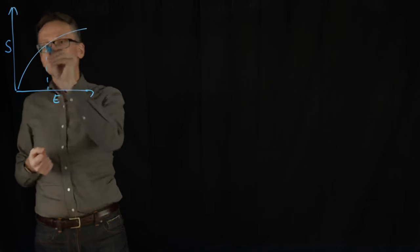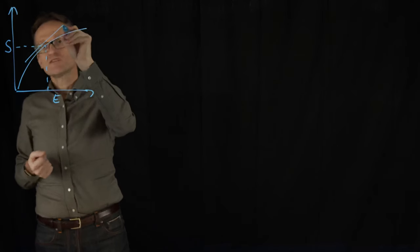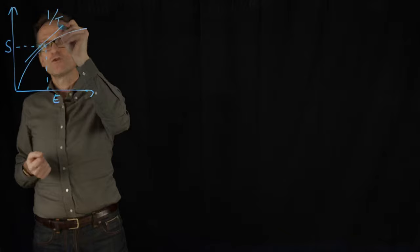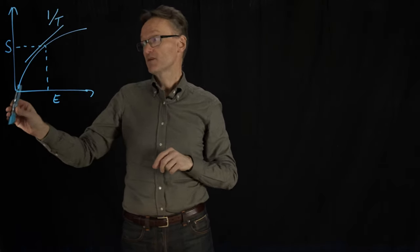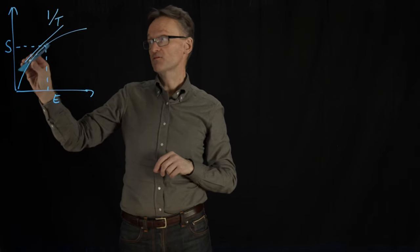At any particular point here there's going to be a derivative and that derivative is 1 over T. What that means in practice is that as I'm pumping in more energy the system can decide where it wants to be here.